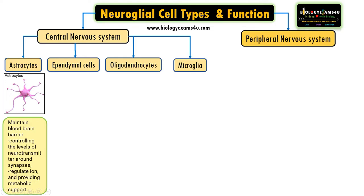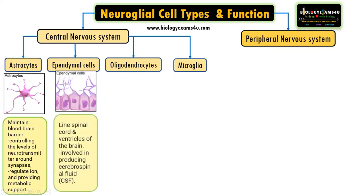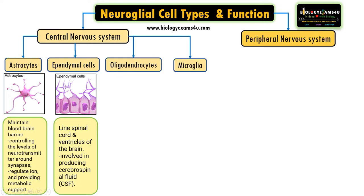The second type of cells is ependymal cells. Ependymal cells are responsible for the formation of the thin membranous lining of the spinal cord and ventricles of the brain, which is called the ependyma. They are also involved in the production of cerebrospinal fluid.